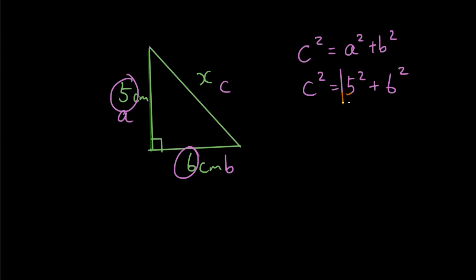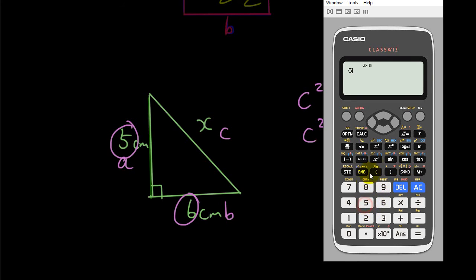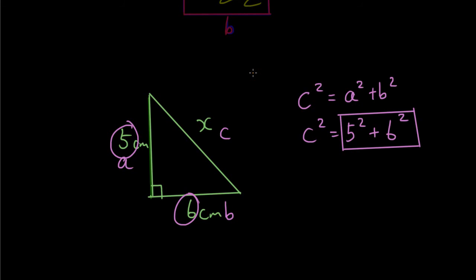Now five squared plus six squared, you can input that into your calculator. Let's bring up the calculator. So five squared plus six squared. And the answer is sixty-one. So c squared is sixty-one.